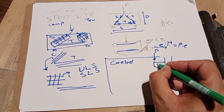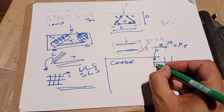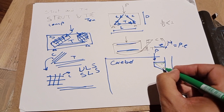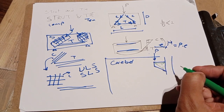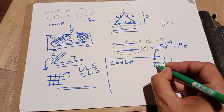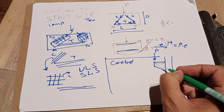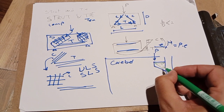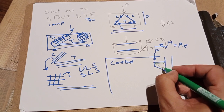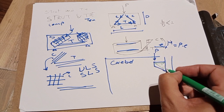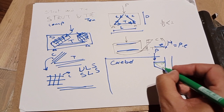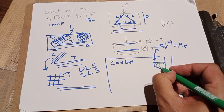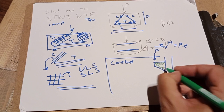For a corbel, one side is going to be in tension and the other side in compression. For the compression zone, we need reinforcement in that direction, and for the tension zone, we need reinforcement in the corresponding direction. As mentioned before, it is almost impossible to have this exact reinforcement arrangement in such a short distance, so we use vertical and horizontal reinforcement instead.